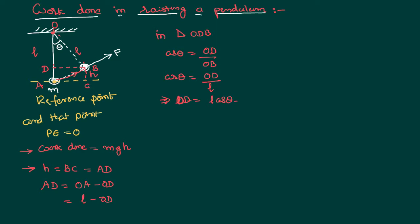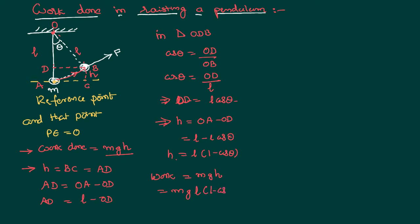Substituting this value of OD in the place of BC, or in the place of h, we can write h as OA minus OD, that is l minus l cosθ, which equals l(1 − cosθ). Substituting this in the definition of potential energy, we can write: work done equals potential energy equals mgh, which is nothing but mgl(1 − cosθ). We can calculate the work done in this case using this formula.